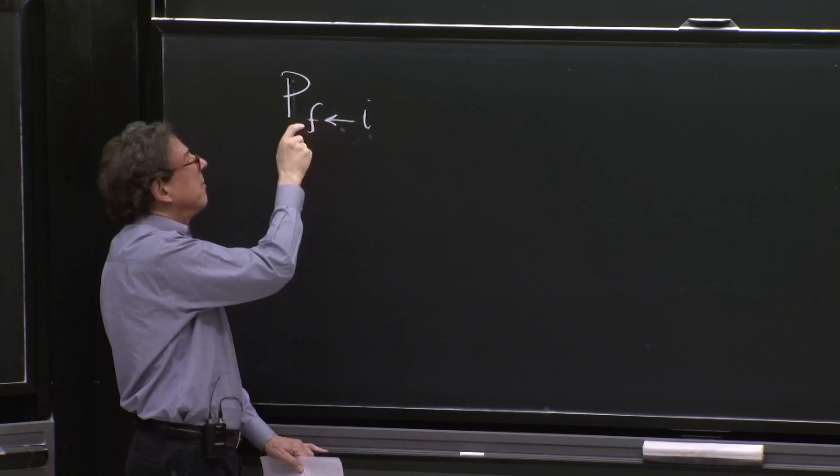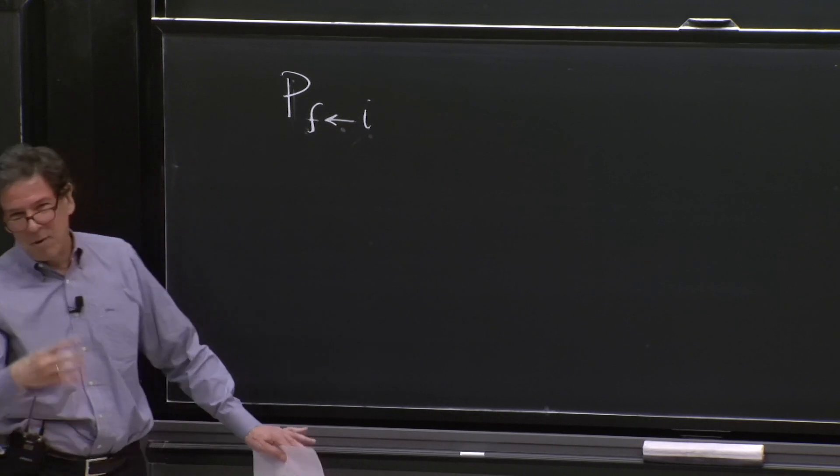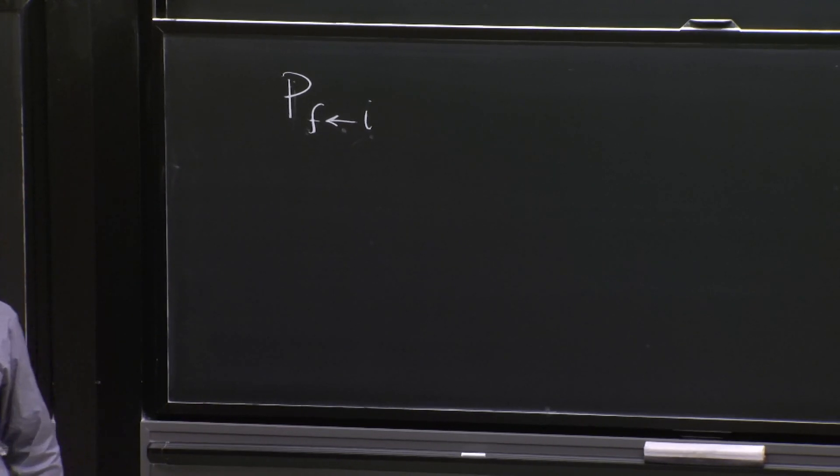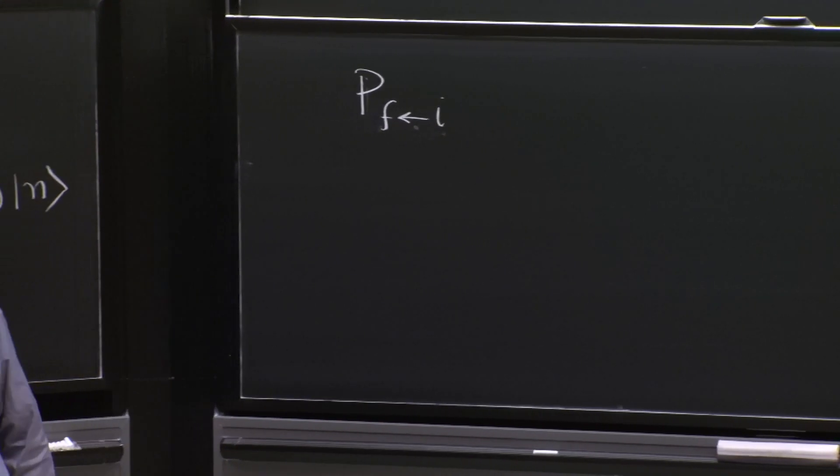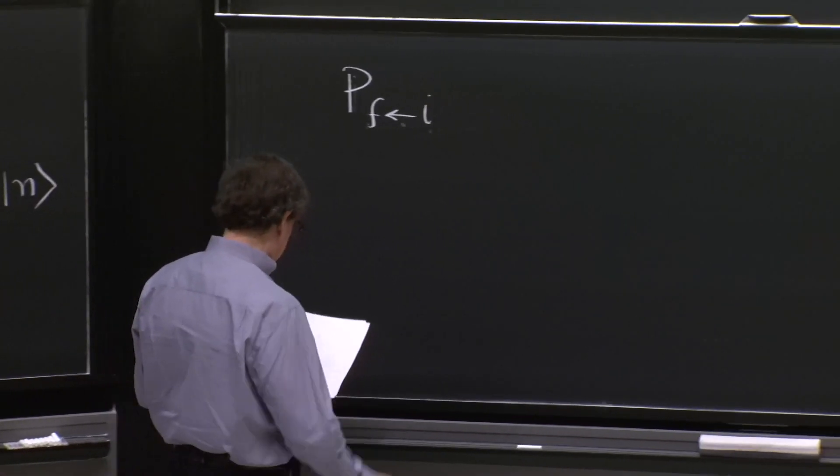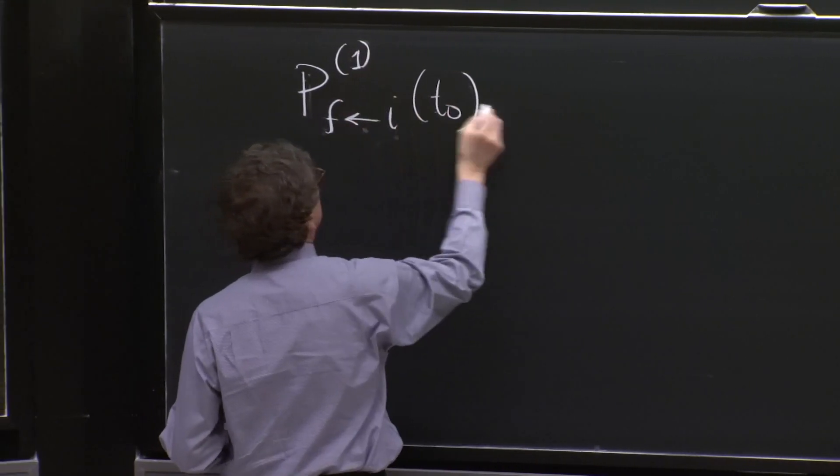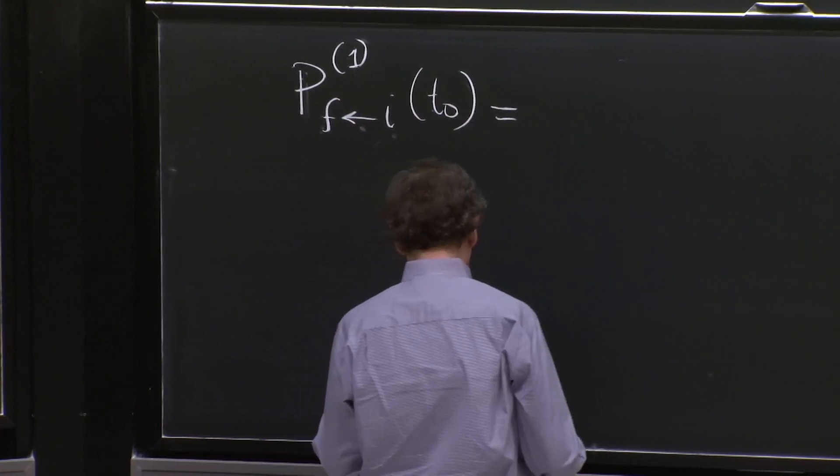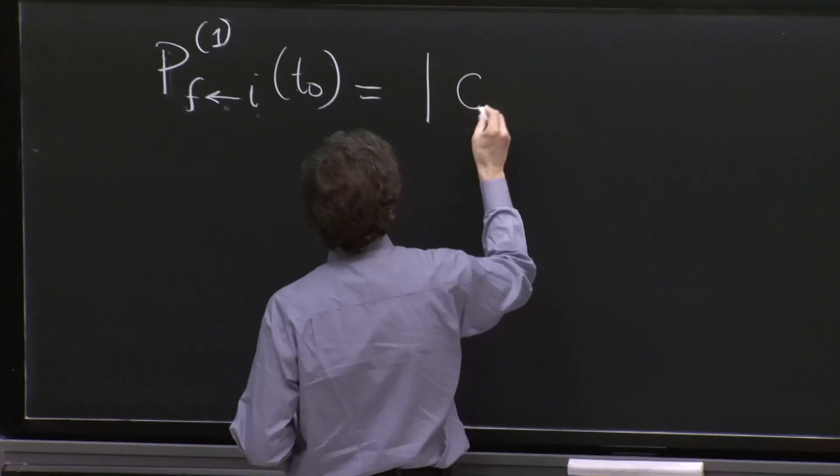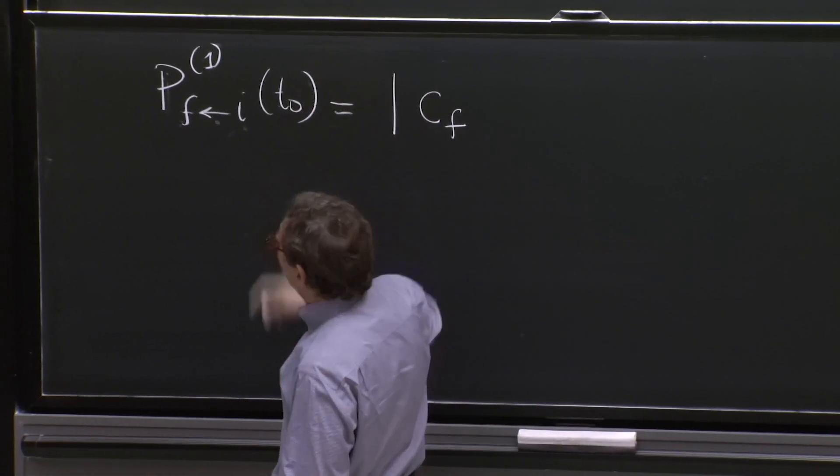Some people like it like that. I'm going to do it in the sense that the initial state always appears as a ket, the final state as a bra. So you draw the arrow like that, more or less, to keep the sense of order in your brain. But if it doesn't help, you write it whichever way you want. So pfi at t naught 1 is the norm squared of this coefficient, cf1.